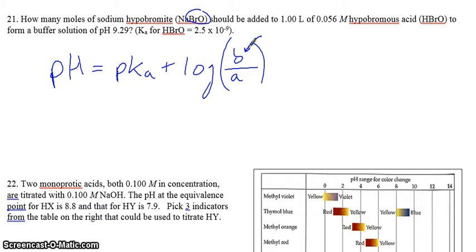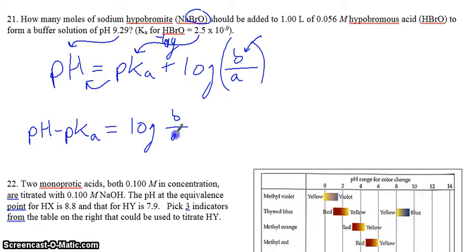And, what we'll have to do is rearrange the equation. So, we know pH. That's given to us. We know pKa from the Ka. Just negative log it. I apologize for the slight messiness. And then, we have to undo this. So, we're going to move the pKa this way. So, we'll do pH minus pKa will equal log of base over acid.